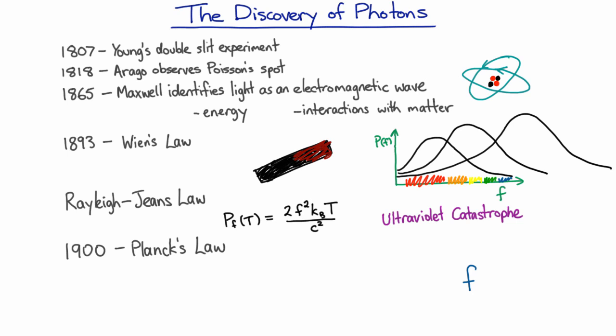But Planck made an assumption that it actually came in little packets. The only energies that it could have were multiples of this quantity. So the frequency times this constant that Planck had to invent, it's now called Planck's constant, and has a value that is very small.